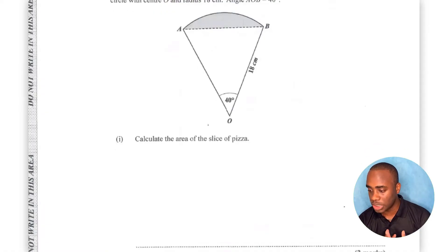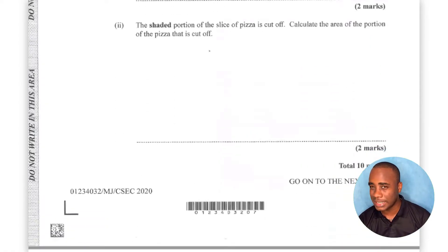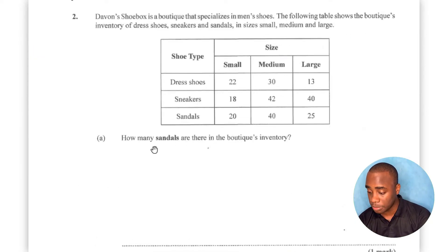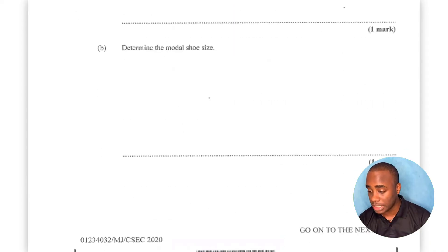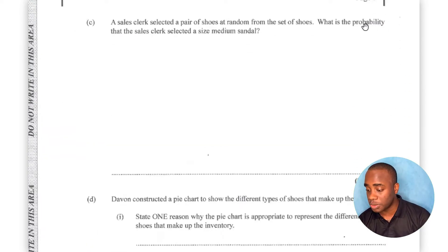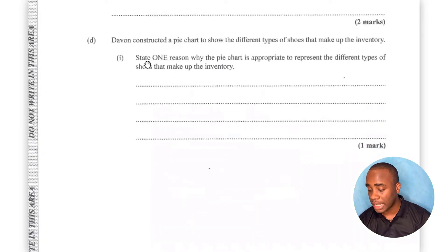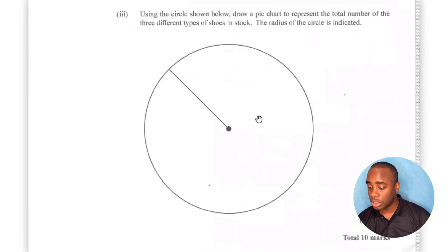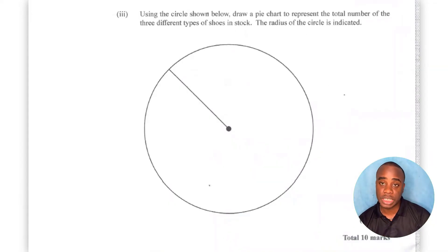The B part of the question ties in with some type of sector area. And if you go down to question 2, this is a statistics type of question where you're supposed to gather some information from a table, determine more information, and there's a little probability. You're supposed to explain something based on a pie chart, then draw the graph and construct a pie chart from the information given.